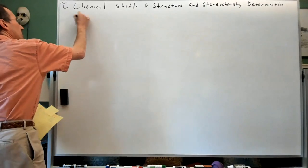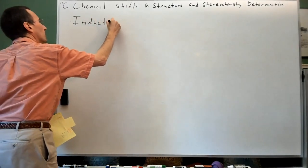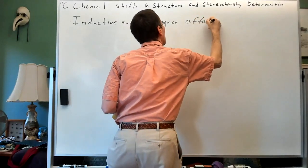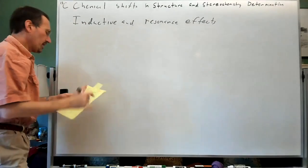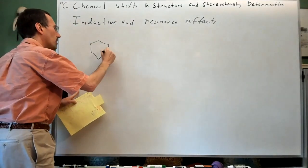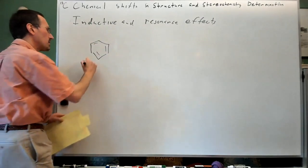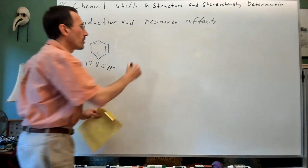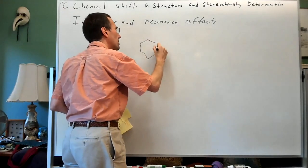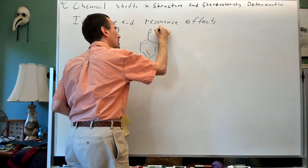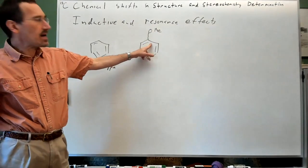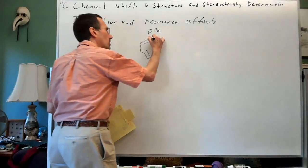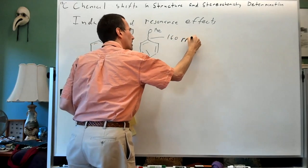Let's start with inductive and resonance effects, because these are really easy to understand. Benzene is 128.5 ppm. If you put an oxygen on the benzene ring — say you go to anisole or phenol — now the carbon next to that oxygen has the inductive effect of the oxygen. That's going to shift it downfield. In anisole, we're down to 160 ppm.